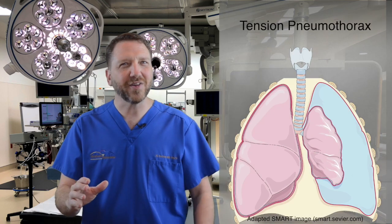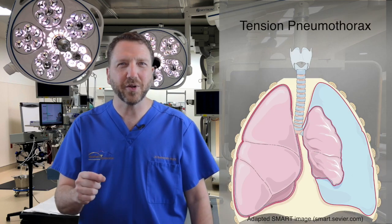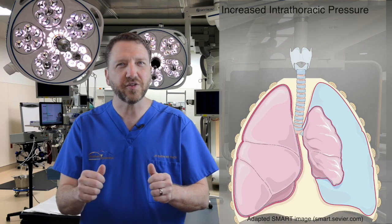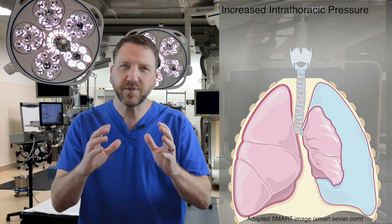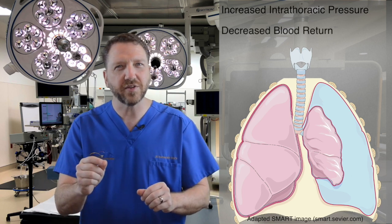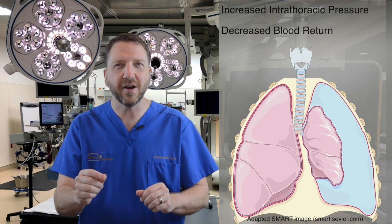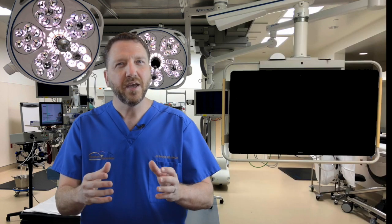Airway and breathing emergencies are simply high-stress situations, and tension pneumothorax ranks right up there. A tension pneumothorax results when air escapes from the lung into the pleural space, creating an increase in intrathoracic pressure as the lung collapses. This, in turn, causes a decrease in blood return to the right side of the heart and ultimately results in cardiopulmonary collapse.